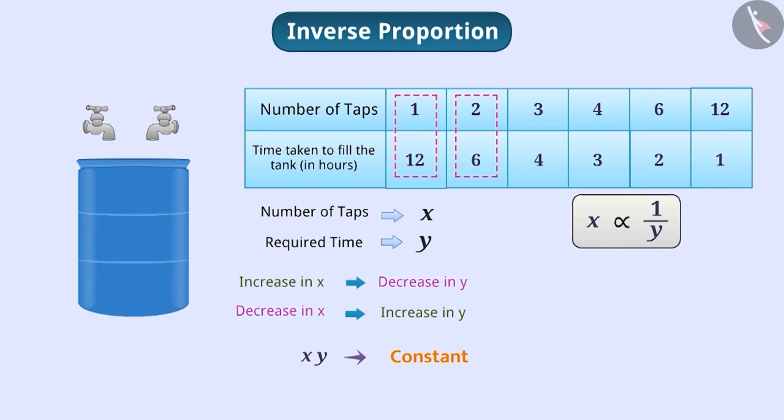In this way, if xy is equal to k for two values x and y, where k is a constant and x is proportional to 1 by y, then we say that x and y are inversely proportional.